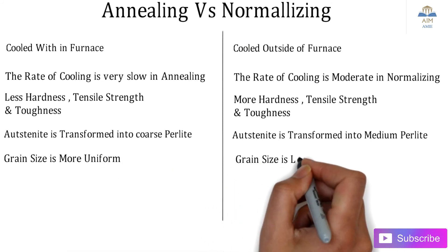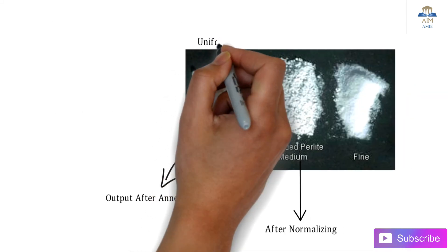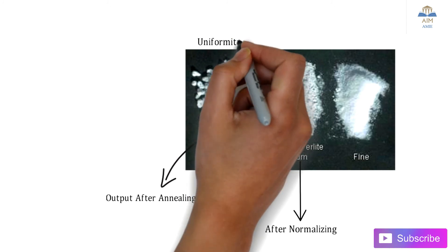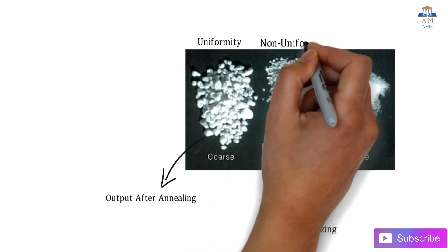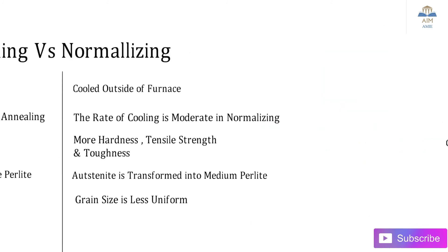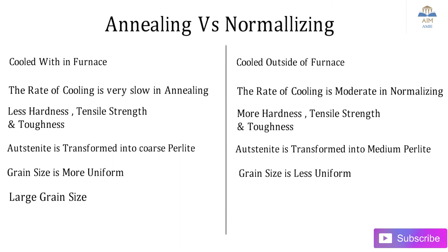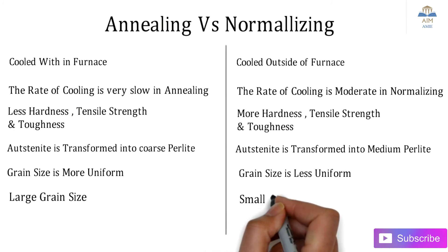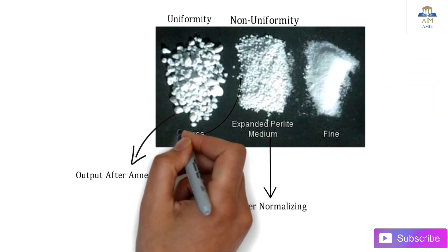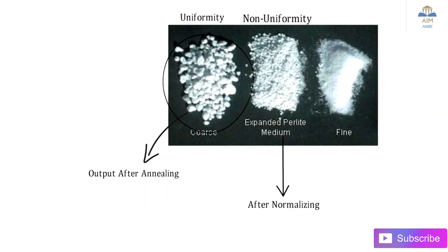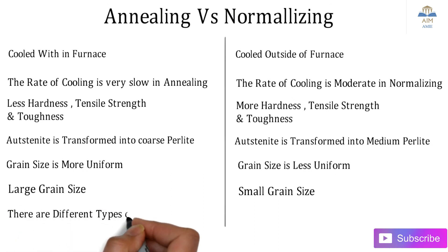Grain size is more uniform in annealing, whereas grain size is less uniform in normalizing. As seen in the image, annealing produces coarse, large grain sizes, while normalizing produces smaller grain sizes.